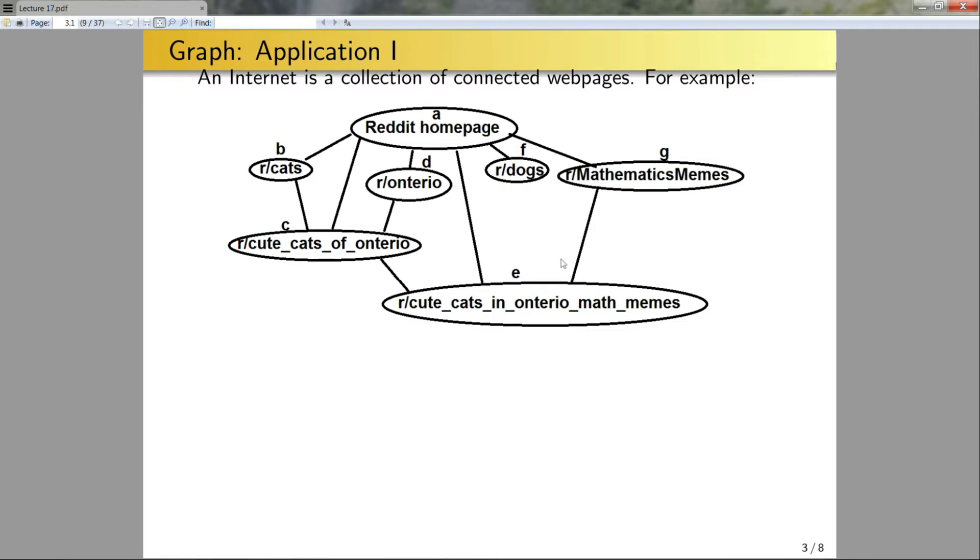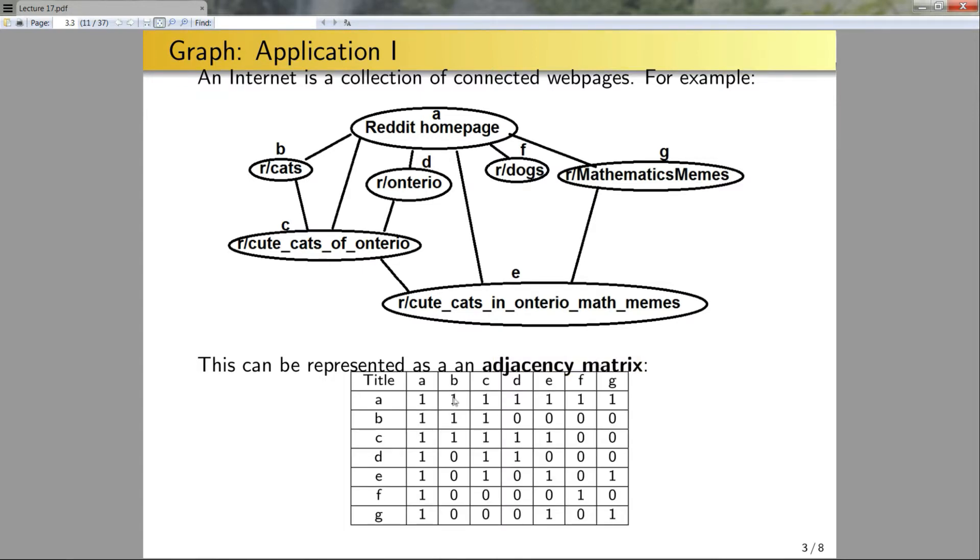But if I'm talking about the real internet, it's really massive. So I might want to be able to search for something. There's a few ways you can implement search engines by trying to search this graph. One way is to first turn this into a matrix. So this is the idea of an adjacency matrix. Here, assuming that these connections go both ways and that every page is connected to itself, then the adjacency matrix would be given by this. In the adjacency matrix, I put a 1 whenever a particular web page is connected to another web page and a 0 when they are not connected.